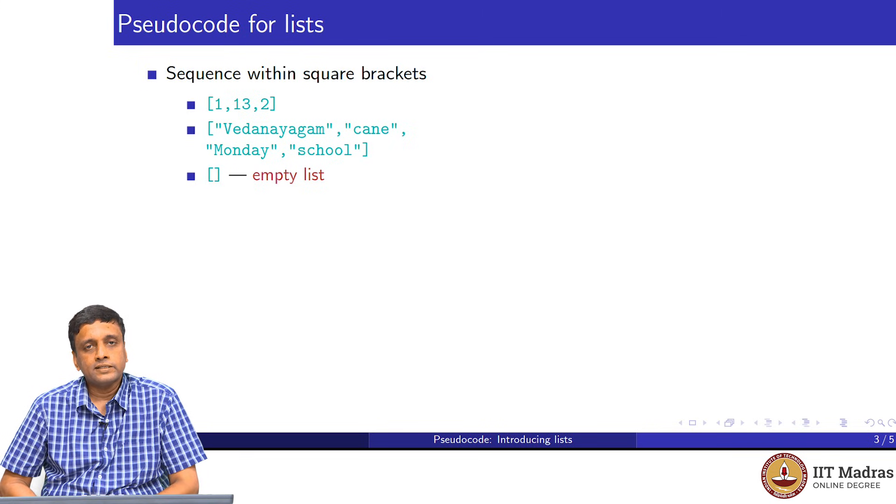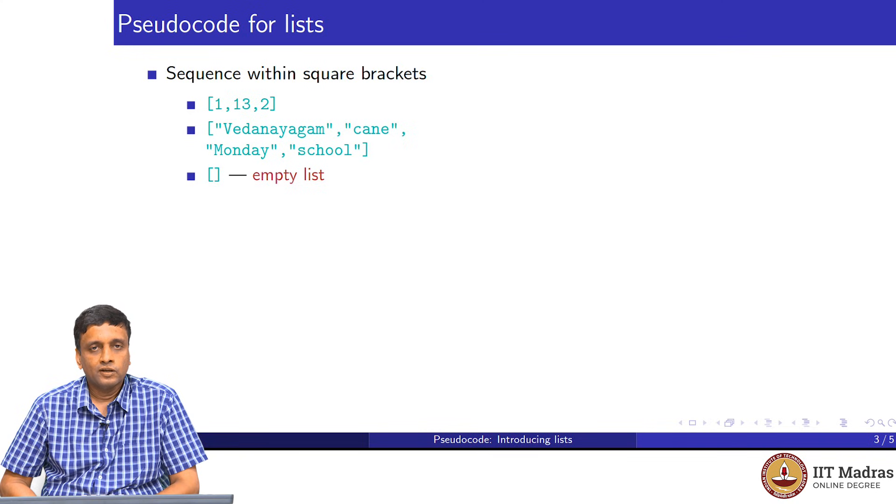The first question is, how do you write a list? We use the square bracket notation to denote the beginning and the end of the list, and we write the elements of the list between the square brackets using commas. Very often, our elements will be of the same type. For instance, we have a list in the first example of integers 1, 13 and 2. In the second, we have a list with four strings: Vedanayagam, Kane, Monday and school.